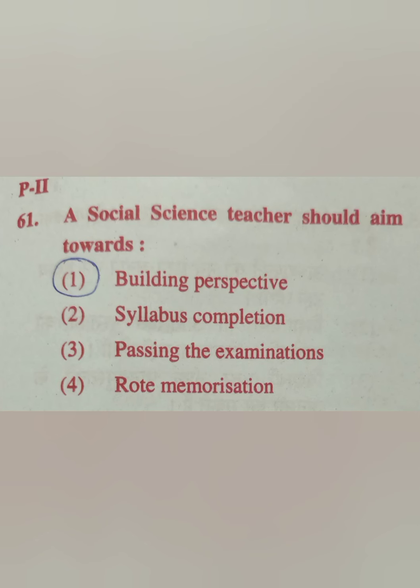Question 60: A garrison town refers to — a fortified settlement with soldiers. Option number 1 is the correct answer. Question 61: A social science teacher should aim towards — building perspectives, syllabus completion, passing the examination, or rote memorizing? The correct answer is building perspectives.